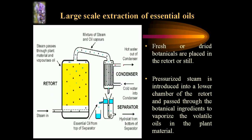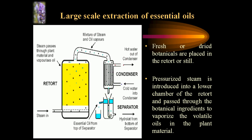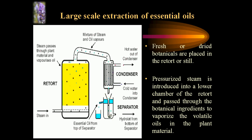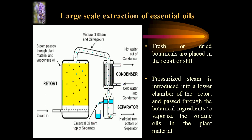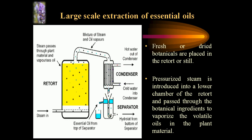In large-scale extraction of essential oils, dried botanical materials are placed in the retort of the still. Steam rises into the lower chamber of the retort and passes through the botanical ingredients to vaporize the volatile oils present in the plant materials.